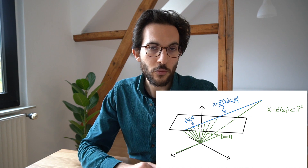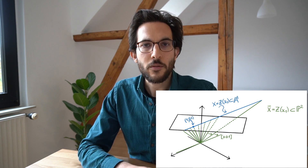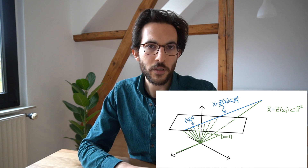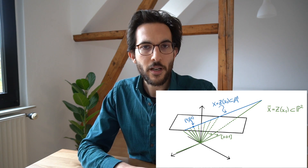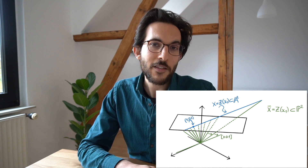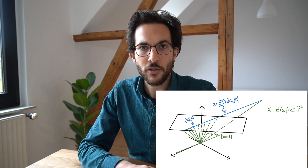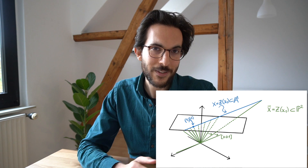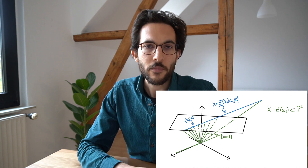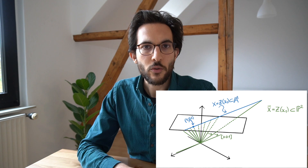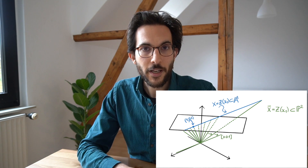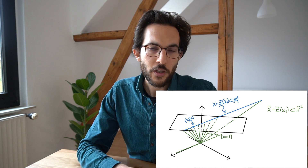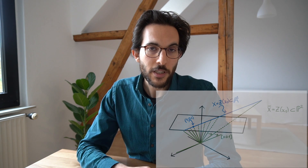Here's an example: take a line inside A2 and embed the plane A2 inside P2 by setting the zeroth coordinate to 1. For each point on the line, look at the line it generates with the origin in three-dimensional space, and trace what happens as the point moves along the line. The corresponding lines become horizontal, and you see the limiting object: you just have to add one new point, called the point at infinity of this line.